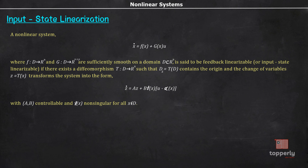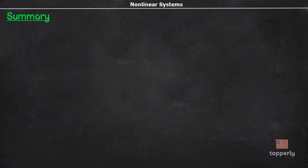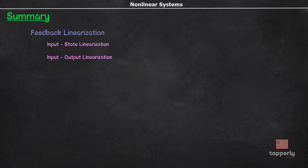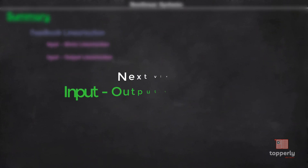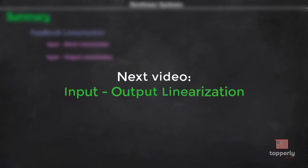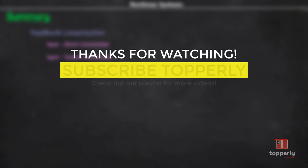That concludes our lecture. To summarize, we have introduced the concept of feedback linearization and seen that it has two forms: input-state linearization and input-output linearization. We then studied input-state linearization — when it is applicable, its standard form, and its definition. In the next video, we will cover input-output linearization. If you found this lecture useful, please like the video and subscribe to the channel. Thanks for watching, and have a nice day!